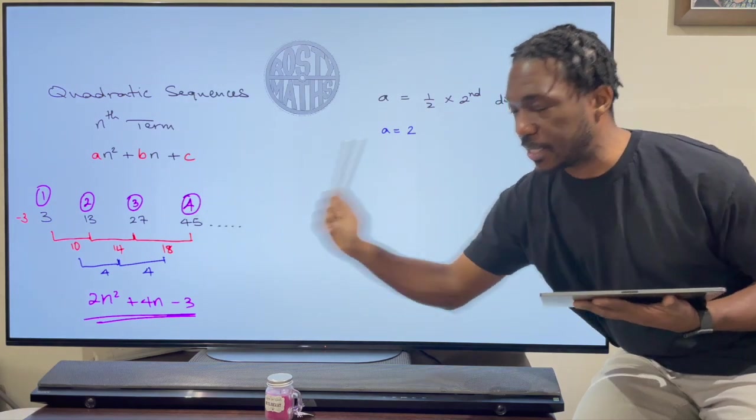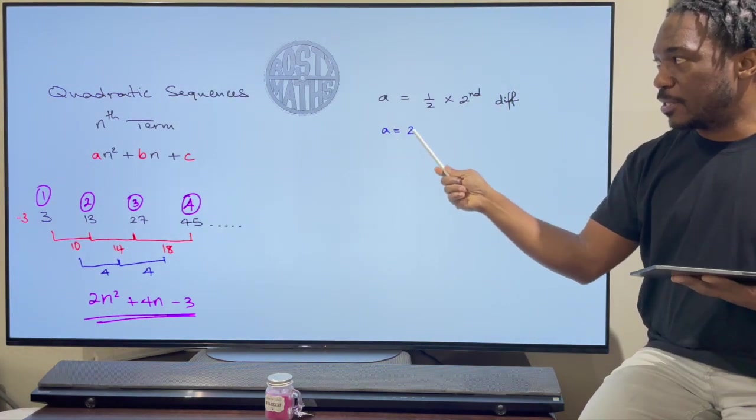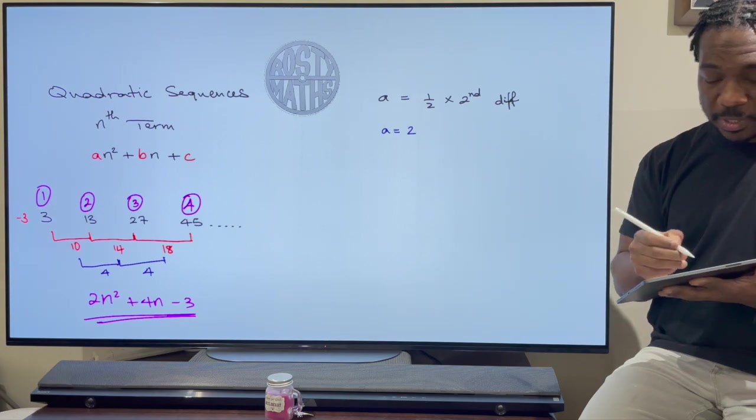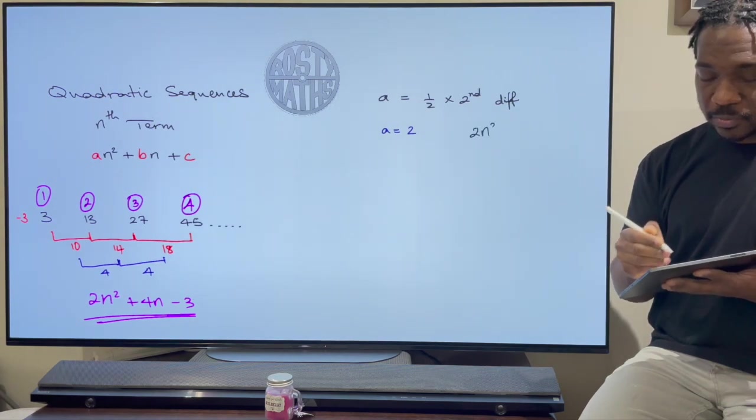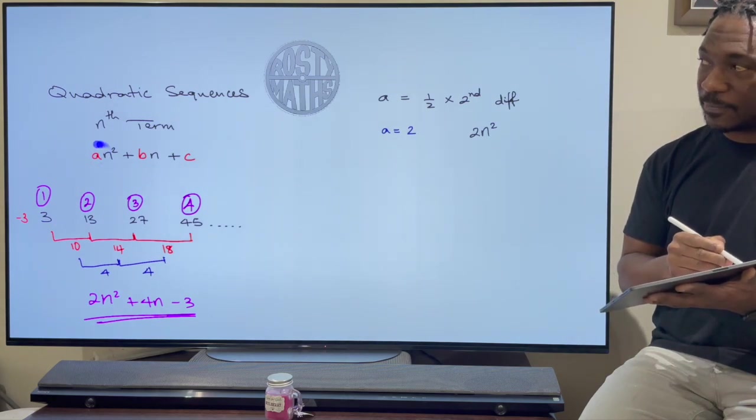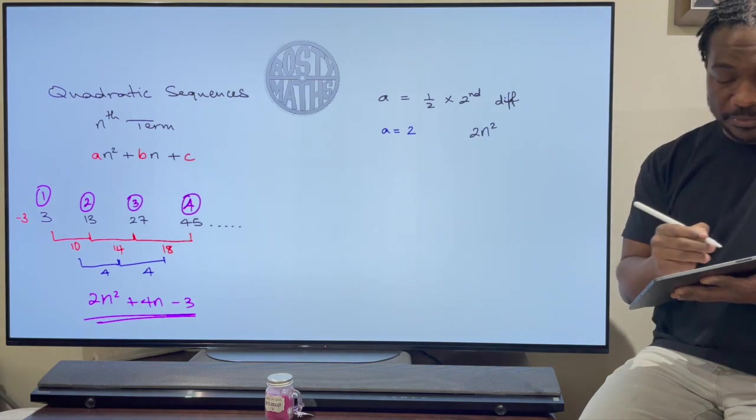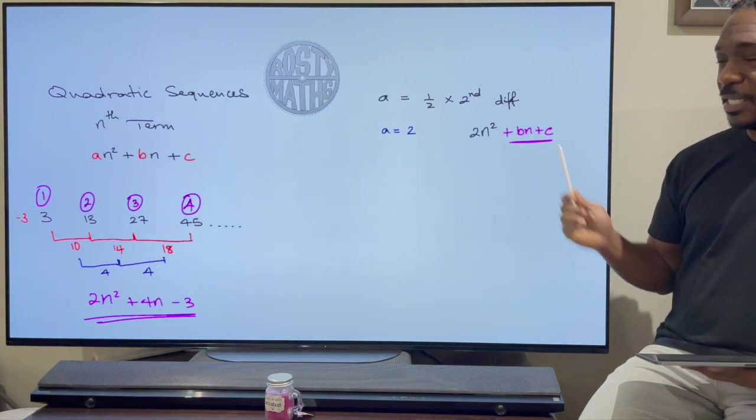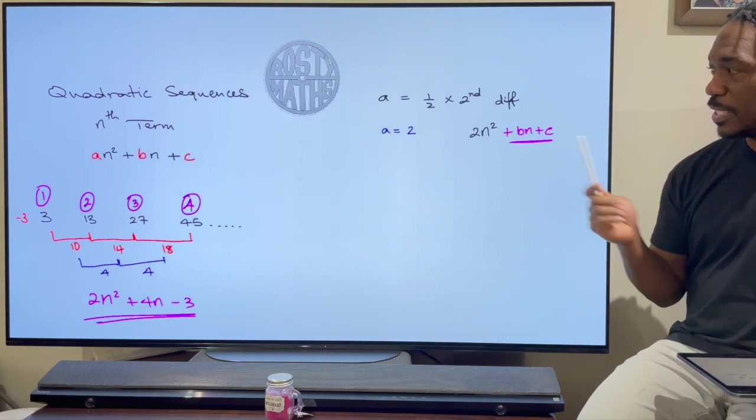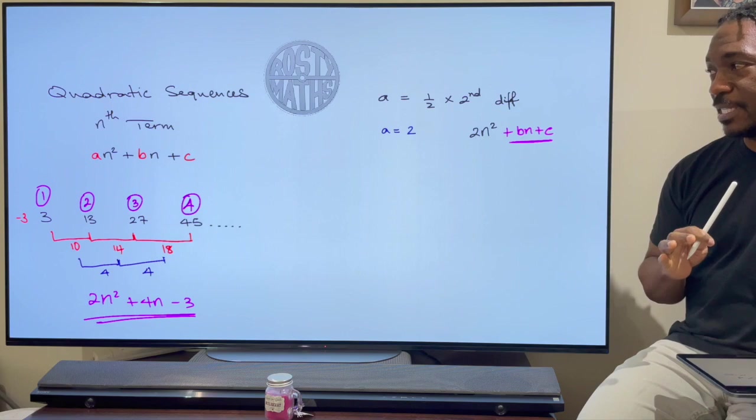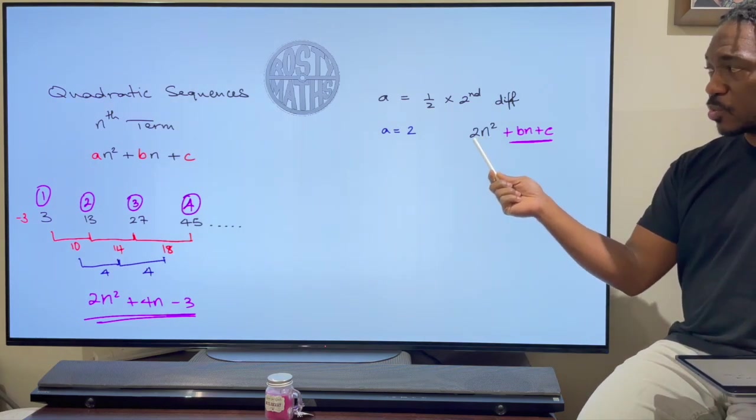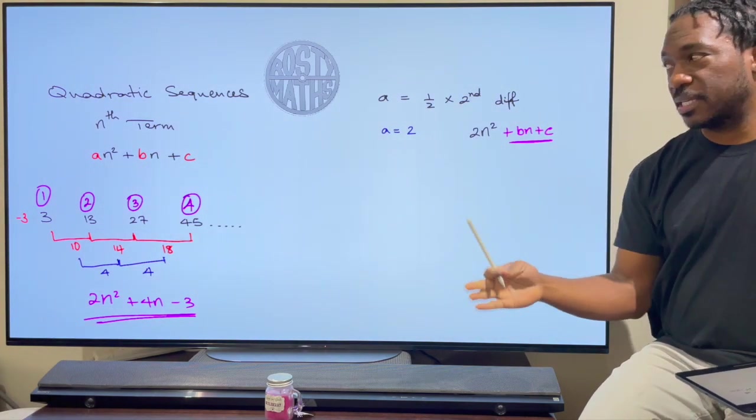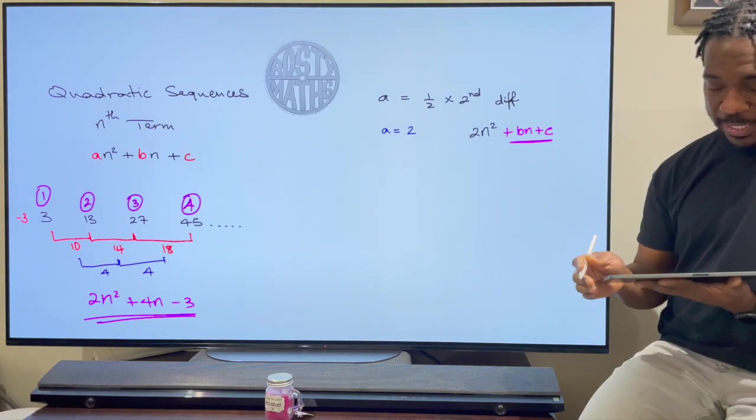You still need to find that second difference and you still need to work out a which is half of the second difference. A is still 2. And that means that the first part of my sequence is 2n² because all I know is this an² over there. And that leaves me to find bn plus c. Now when you look at this that's a linear sequence. So we need to find what this sequence here is. And in order to get that sequence what I need to do is work out what 2n² is. And then I'm going to take that away from the original sequence. And once I do that it's going to leave me with the linear sequence.